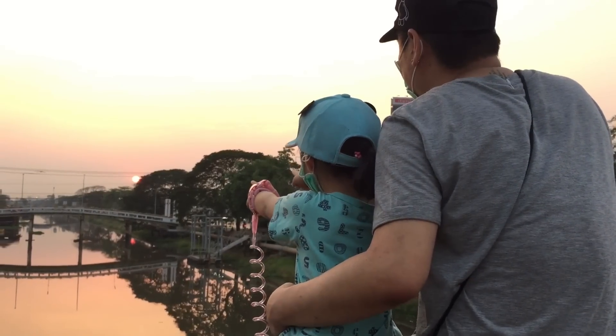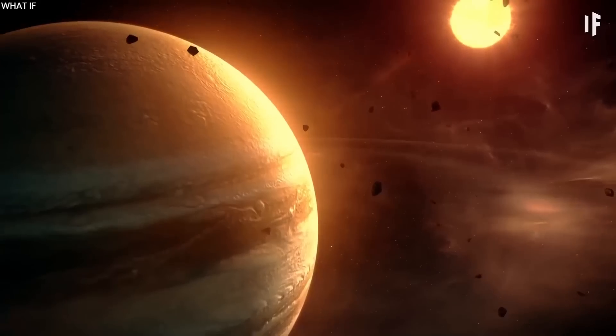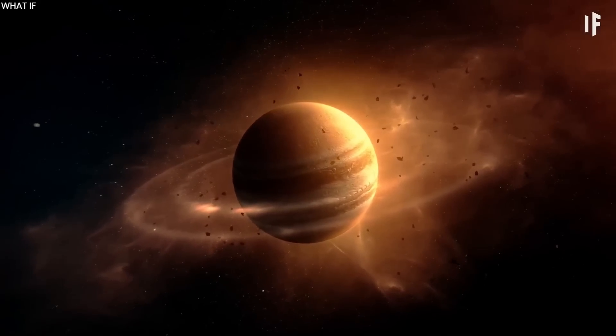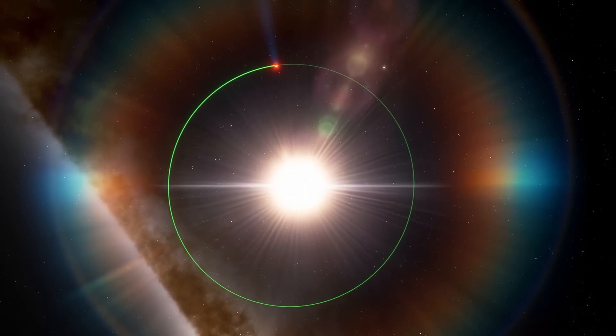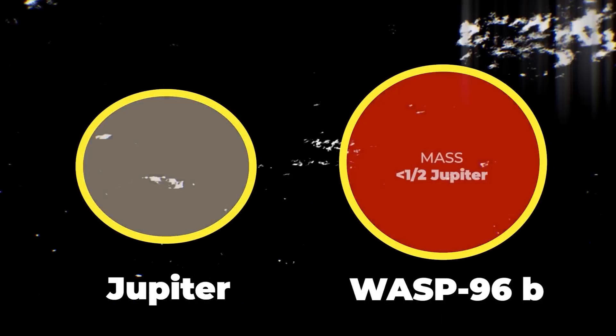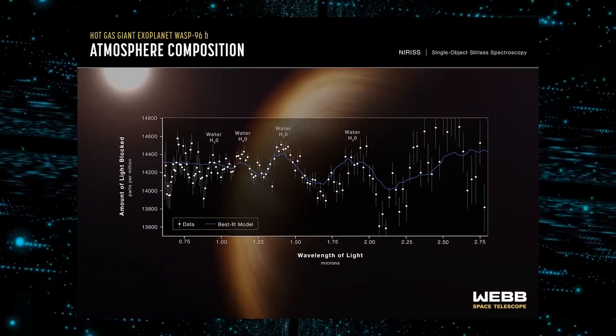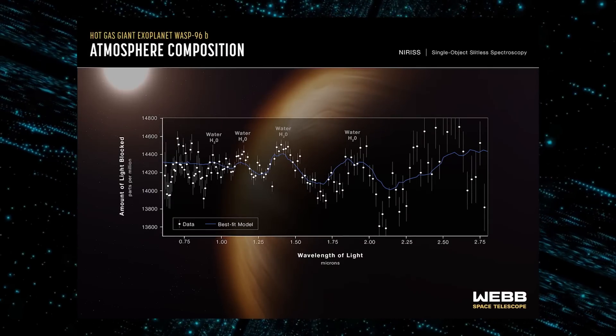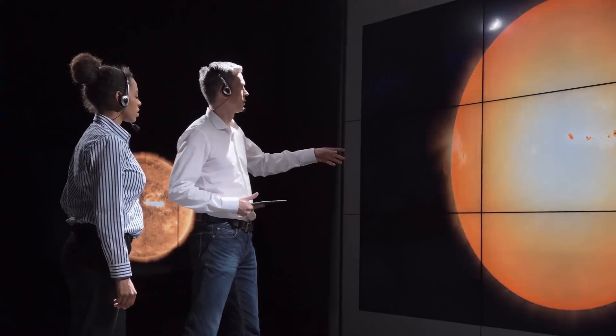WASP-96b is a gas giant planet that orbits a sun-like star 120 light-years from Earth. WASP, which stands for Wide Angle Search for Planets, has a mass slightly higher than Jupiter's but lower than Saturn's. Whatever the reason, observations made in 2018 from the ground showed that this particular planet is free of any sky distractions. Astronomers are interested in it because there are no clouds covering its atmosphere.